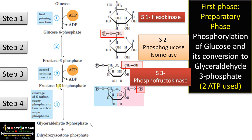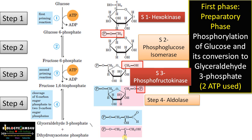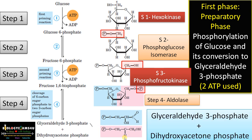In step 4, fructose-1,6-bisphosphate splits to form two 3-carbon compounds: glyceraldehyde-3-phosphate and dihydroxyacetone phosphate. Glyceraldehyde has an aldehyde group, whereas dihydroxyacetone phosphate has a ketone group. They are isomers with the chemical formula C3H6O3. The enzyme is aldolase. We now have two 3-carbon compounds at the end of the preparatory phase, with 2 ATP molecules used for phosphorylation.